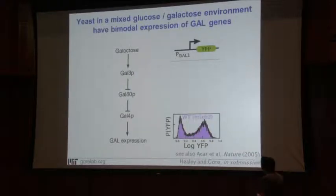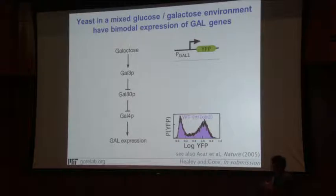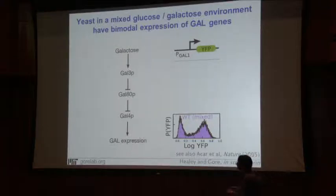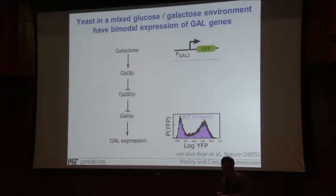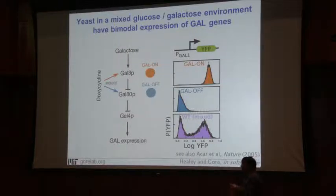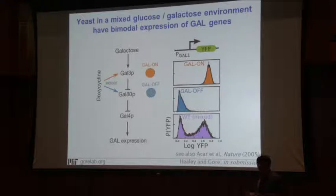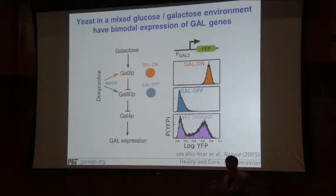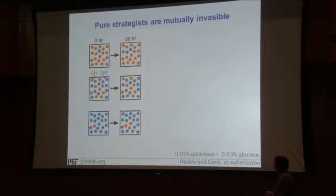What we've been doing in experiments with the GAL network is arguing that this is one way to think about yeast dynamics in mixed sugar environments. As you heard from Hannah, yeast placed in environments with low glucose and low galactose show a distribution where some fraction of cells turn on the galactose machinery and some don't. We wanted to ask: in this mixed sugar environment, is there negative frequency-dependent selection — is it the case that rare strategies do better than common strategies? We made genetic mutants where one strain is gal-on in this environment and another strain is gal-off, and asked whether there's any game being played between them.